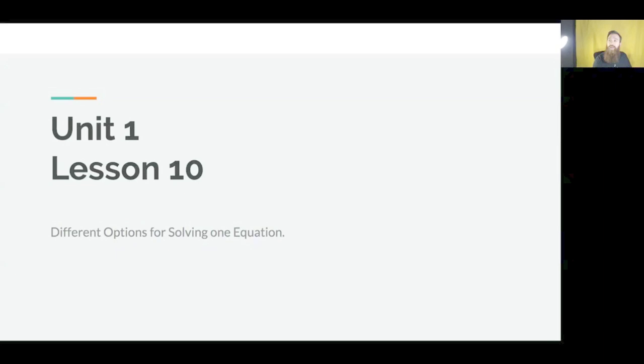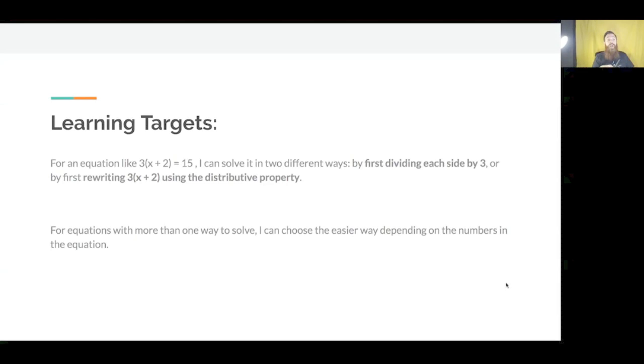Hello class. I hope everyone is doing good today. So let's dive right into this. Unit 1 Lesson 10: Different options for solving one equation. So here are the learning targets. For an equation like 3 times the quantity x plus 2 equals 15, I can solve it in two different ways, by dividing each side by 3 or by first rewriting 3 times x plus 2 using the distributive property. And for equations with more than one way to solve, you can choose the easiest way depending on the numbers in the equation.